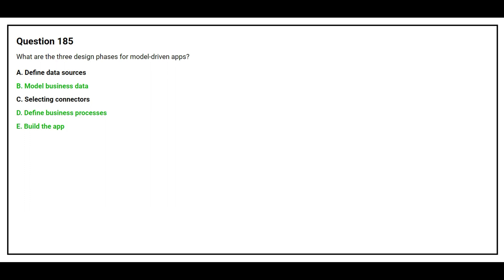The correct answers are Option B: Model business data, Option D: Define business processes, and Option E: Build the app.